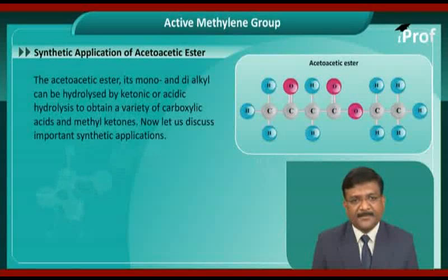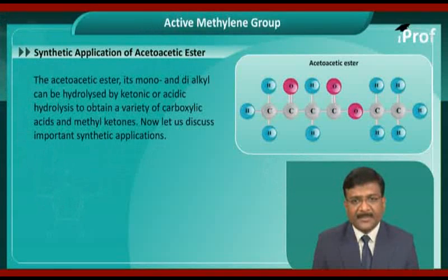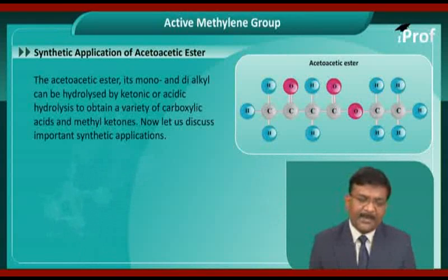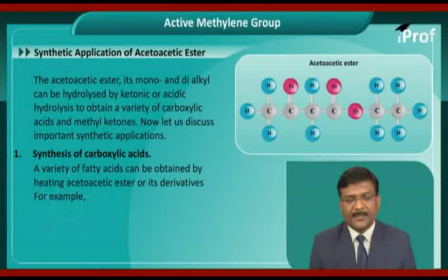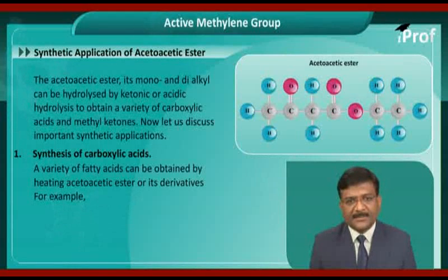Acetoacetic ester and its mono- and dialkyl derivatives can be hydrolyzed by ketonic or acetic hydrolysis to obtain a variety of carboxylic acids and methyl ketones. The first chemical synthesis is the synthesis of carboxylic acids. A variety of fatty acids can be obtained by heating acetoacetic ester or its derivatives with concentrated alcoholic potash — that is, the reaction is carried out under acetic hydrolysis conditions.